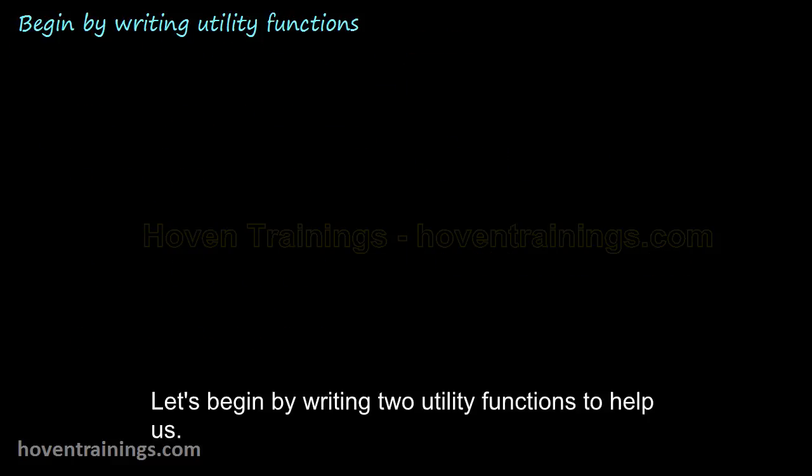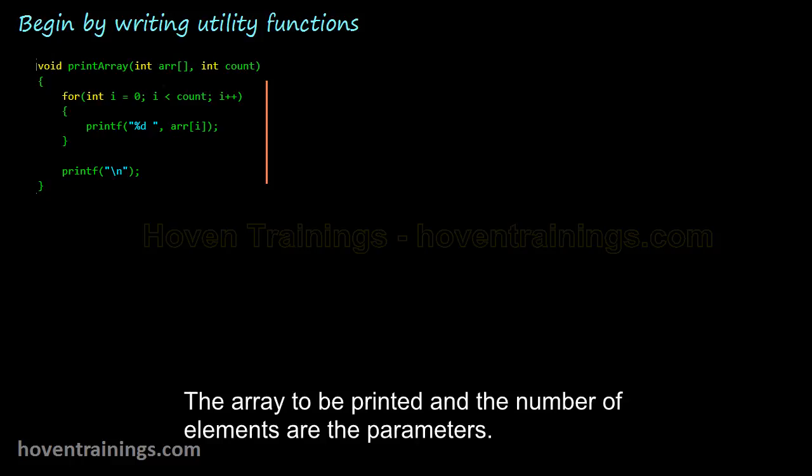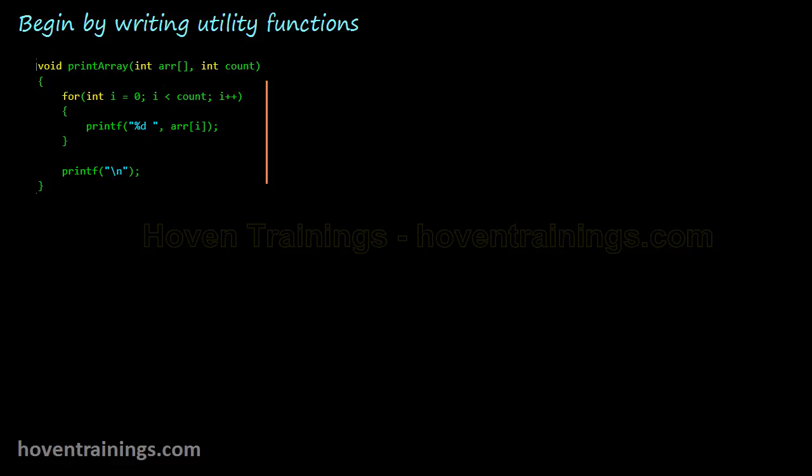Let's begin by writing two utility functions to help us. This function will help us print the contents of the array. The array to be printed and the number of elements are the parameters. A for loop is used to print the contents of the array.